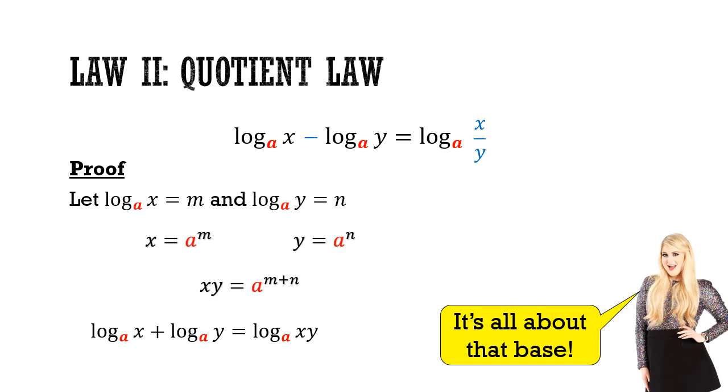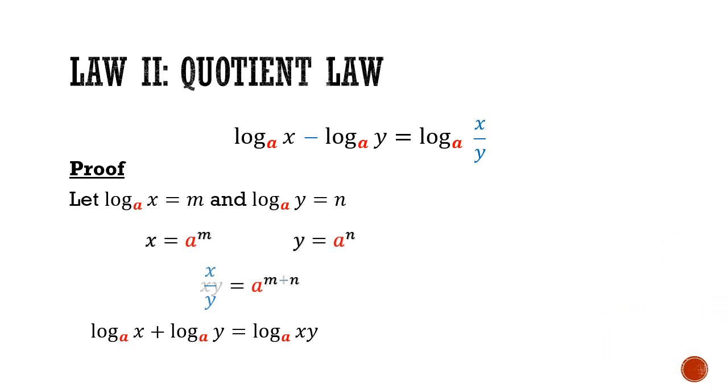Now the rest of the proof is quite similar. We let both logs be m and n. We convert their forms. But this time, we are going to apply the index law of subtraction. So we are going to divide x over y, and we are going to divide a to the power of m by a to the power of n, and that will give us a to the power of m minus n. So the result will be law 2. I hope that you can also appreciate from this derivation how the first two laws of indices are connected to the first two laws of logarithms.